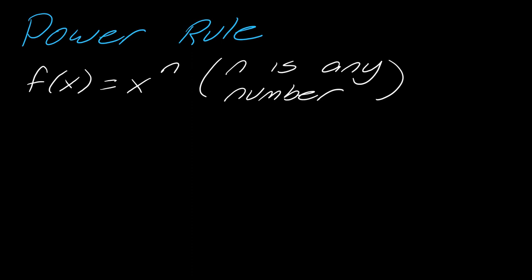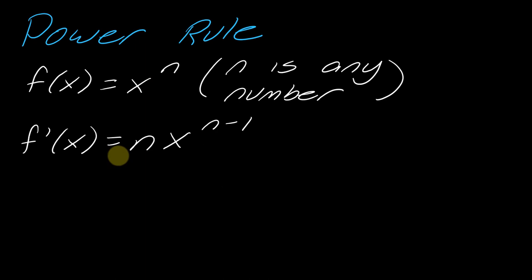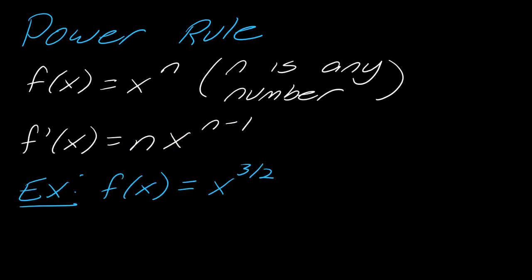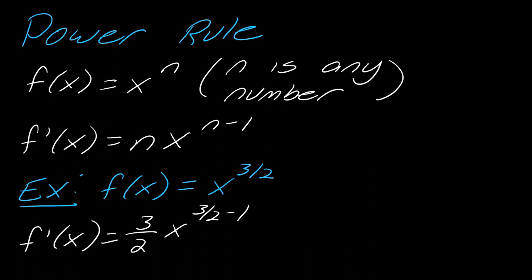Now let's talk about the power rule. For this one you have some function of the form x to the n, where n has to be some sort of number. To take the derivative, you bring the n down and subtract 1 from it. So if f(x) = x^(3/2), I bring the 3/2 down and subtract 1, giving f′(x) = (3/2)x^(1/2).